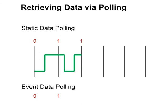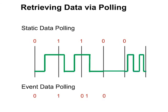During the next poll interval, the input transitions low again. With static or event polling, this transition is reported. During the next poll interval, the input does not transition. With static polling, the current state — still low — is reported. No events are reported with event polling, however, because nothing has changed. During the next poll interval, the input transitions high, low, then high, and then low again. With static polling, only the current state — low — is reported and all of the transitions have been lost. With event polling, however, each of these transitions are reported.